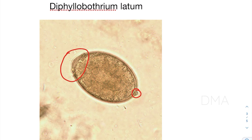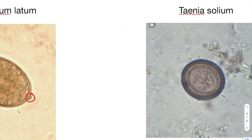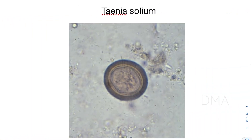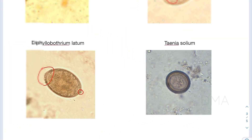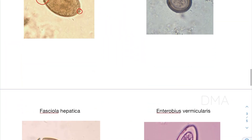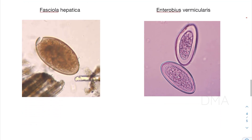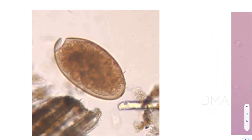Then there is the Taenia solium egg. When it comes to the Taenia egg, you can notice that it is surrounded by a thick striated wall, and also there are three pairs of hooklets inside it.